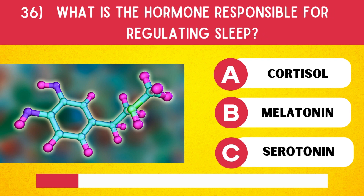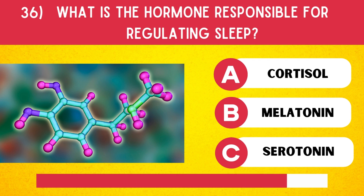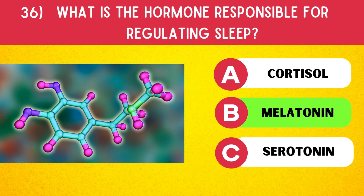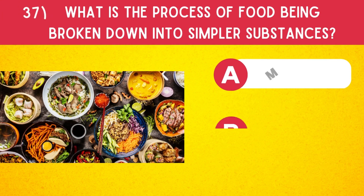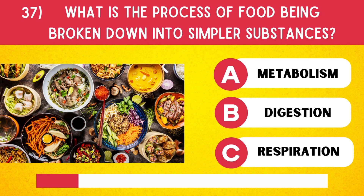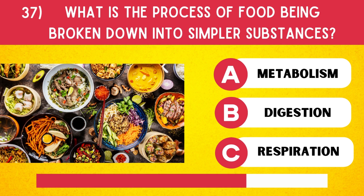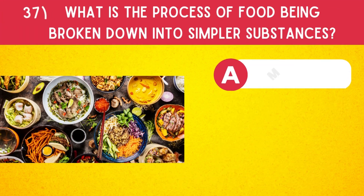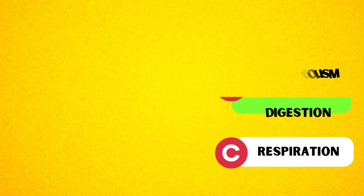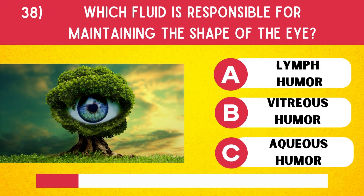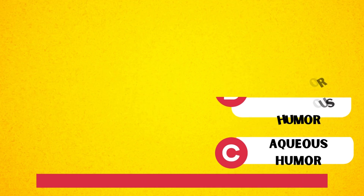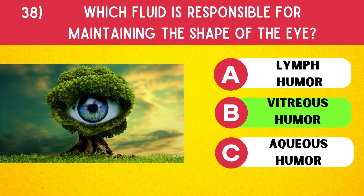What is the hormone responsible for regulating sleep? Melatonin. What is the process of food being broken down into simpler substances? Digestion. Which fluid is responsible for maintaining the shape of the eye? Vitreous humor.